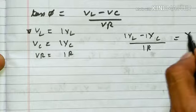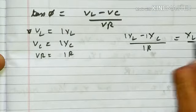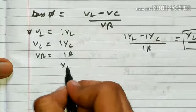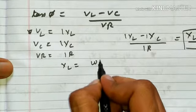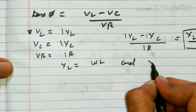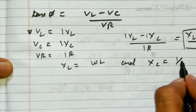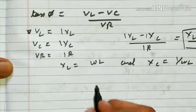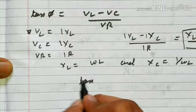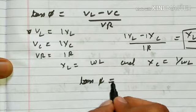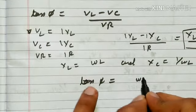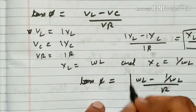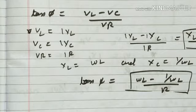Taking I common, we can write (XL - XC)/R. The value of XL is equal to ωL and XC is equal to 1/(ωC). Putting this value, tan φ is equal to (ωL - 1/ωC)/R. This is our final answer for tan φ.